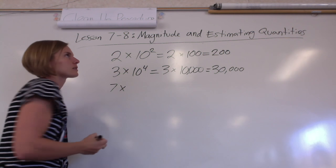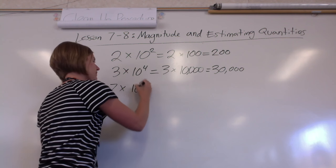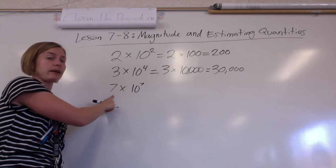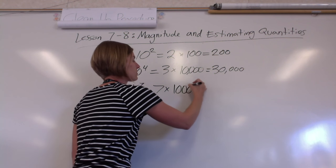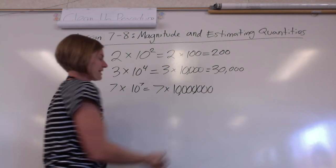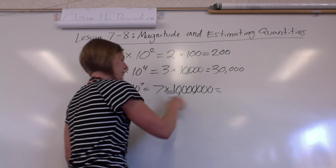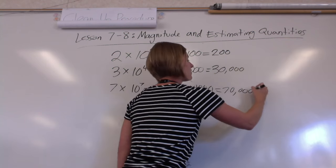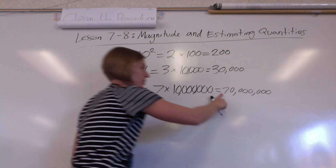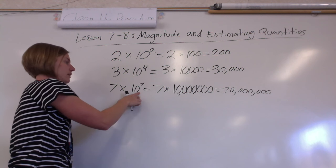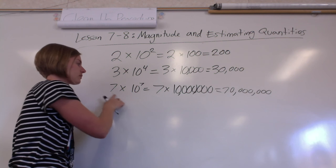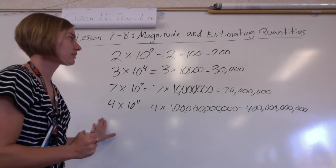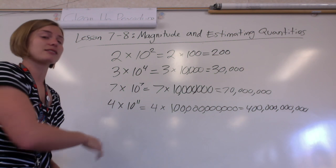What if we went bigger? Let's do 7 times 10 to the seventh. This looks nice and tidy but let's expand it out. Seven times one followed by seven zeros — that's ten million. So if I multiply this out, that's seventy million. And that number written out is longer than this. Writing it out takes a lot longer than just writing this little tiny thing.